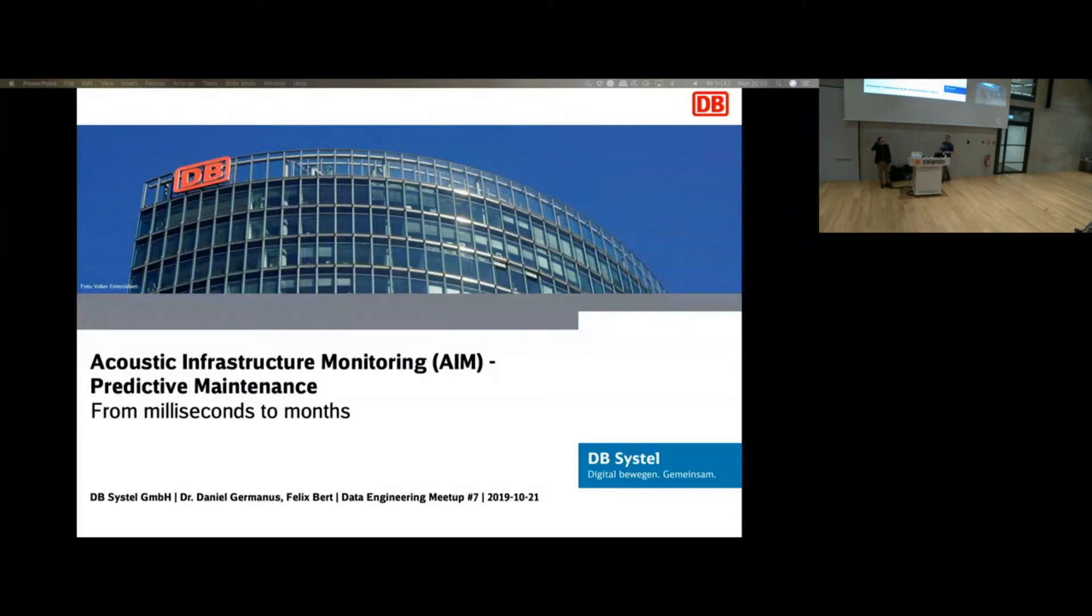We are roughly 4,000 people, mostly located in Frankfurt, but also Berlin and other locations. We are dealing every day with the daily business of Deutsche Bahn, which is basically train stations, a railroad network, high-speed trains, and plenty of people, employees like Felix and me trying to improve on Deutsche Bahn.